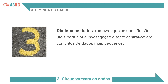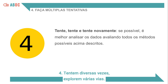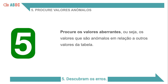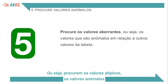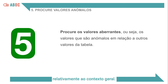Third, lighten the data — remove those that are not helpful for your research and try to focus on smaller data sets. Fourth, try multiple times and explore many paths. Fifth, find the errors — that is, look for the outliers, which are the anomalous values, which can highlight important pieces of information with respect to the overall context.